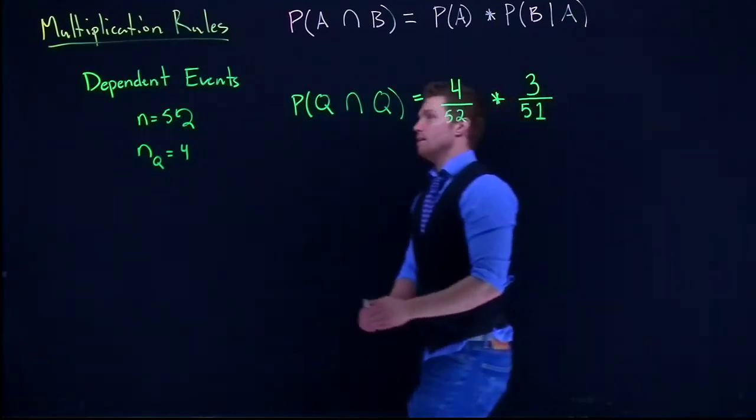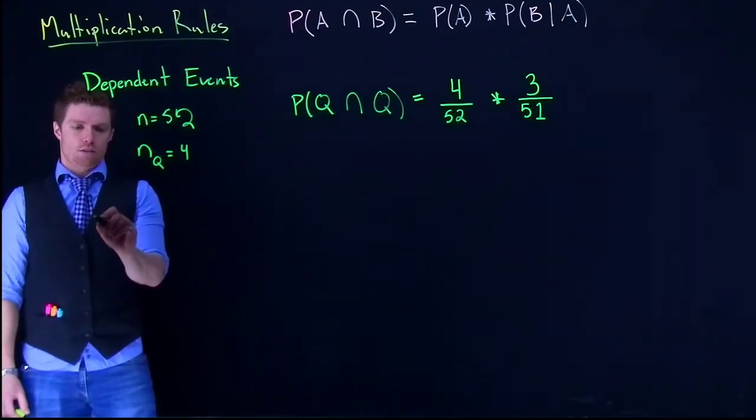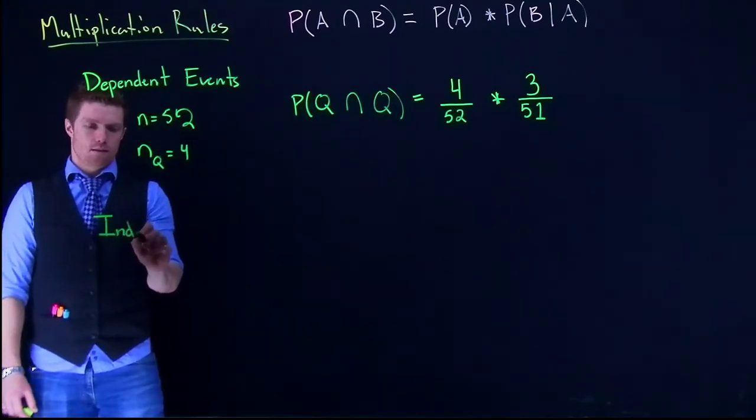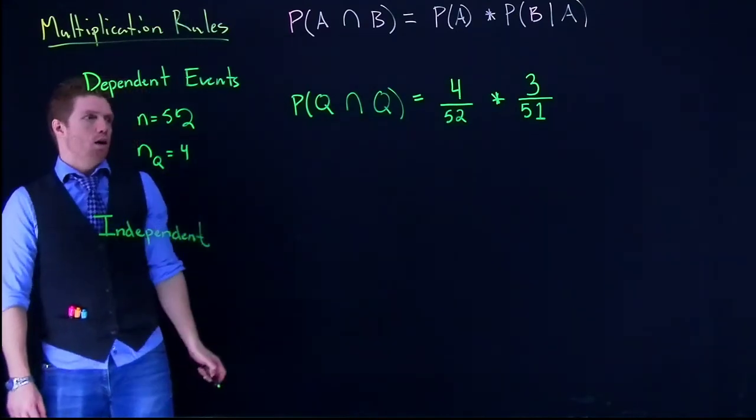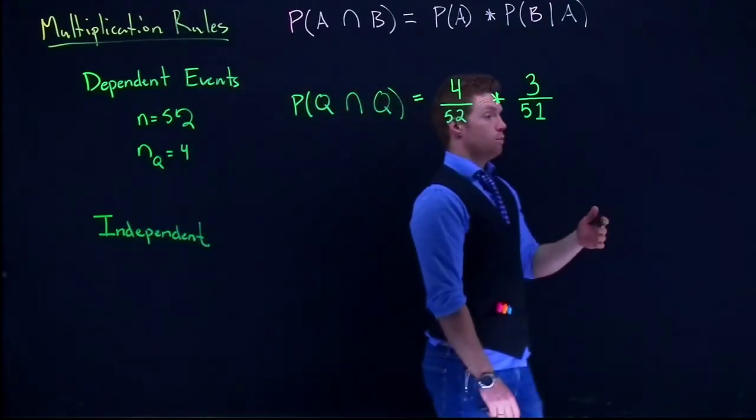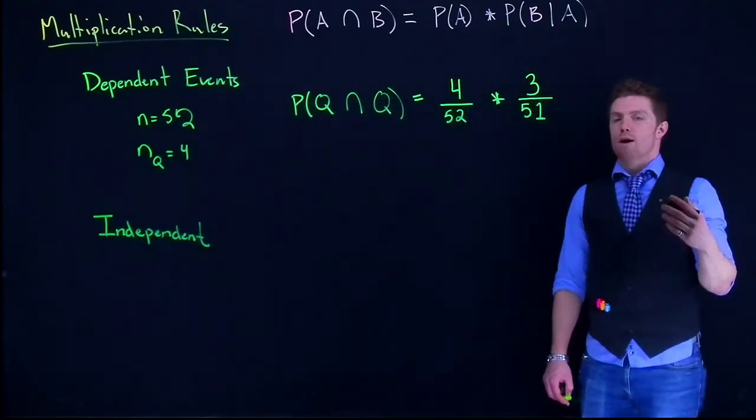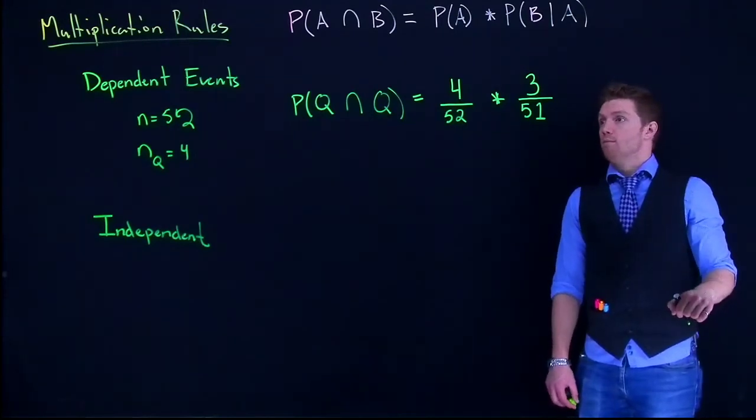Now let's assume that we had independent events, or things that have no effect on one another. So let's put this as independent. And let's combine two completely different things. Let's talk about rolling a dice and drawing a card from the deck.